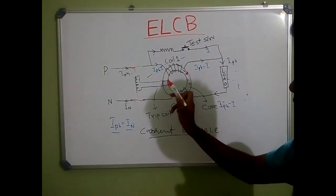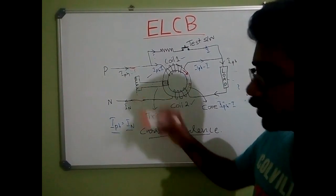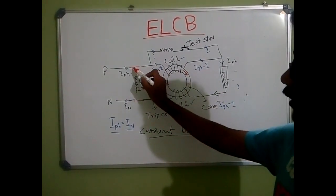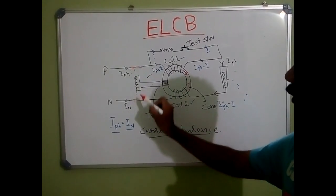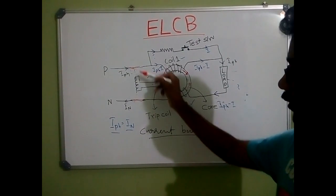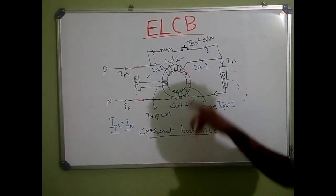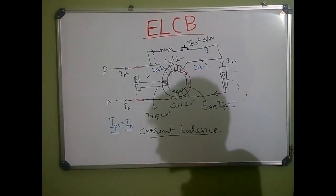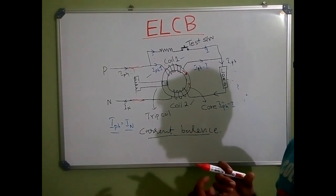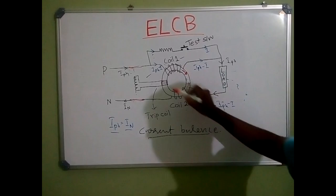The MMF induced in the trip coil is zero, so the trip coil is not activated. This means the switch remains in closed-circuit condition, keeping the supply connected to the load. The trip coil is wound on this magnetic core.